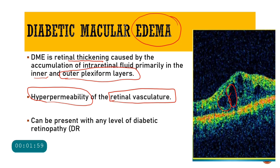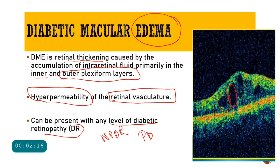Diabetic macular edema can be present with any level of diabetic retinopathy. It can be present along with non-proliferative diabetic retinopathy (NPDR) and it can also be present with proliferative diabetic retinopathy.